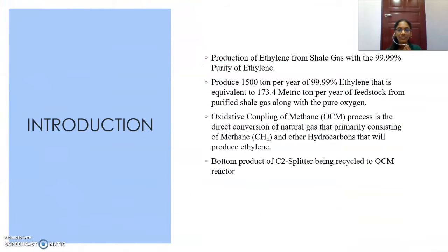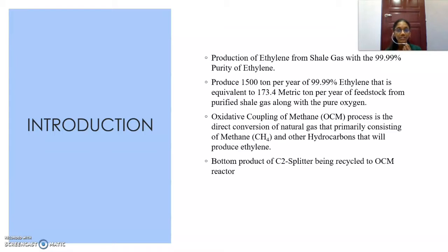The main objective of this project is to produce ethylene from shale gas with 99.99% purity of ethylene, and to produce 1500 tonnes per year of 99.99% ethylene. That is equivalent to 173.4 metric tonnes per year of feedstock from purified shale gas along with pure oxygen. The process used for this project is the oxidative coupling of methane, also known as OCM. It is a direct conversion of natural gas primarily consisting of methane and other hydrocarbons to produce ethylene.